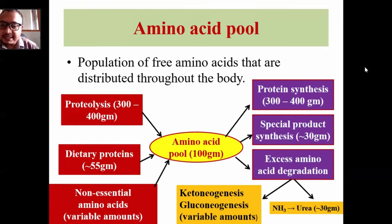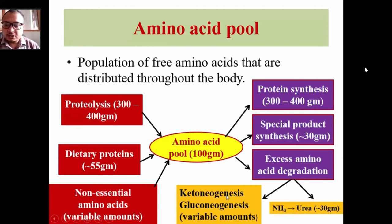The carbon skeletal part of amino acids is utilized either for energy or as precursors for glucose synthesis via gluconeogenesis or for fat synthesis via ketogenesis.